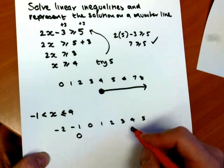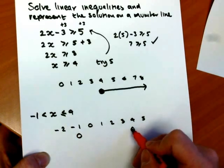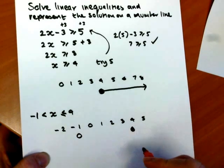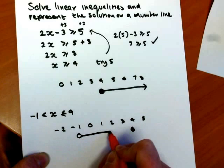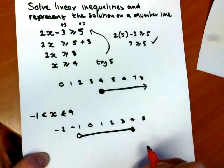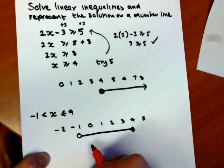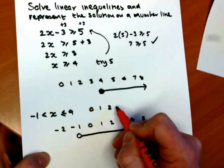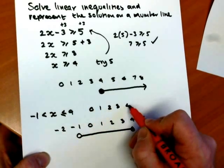And because the 4 has the equals to element to it, fill that in, and then join them together. So we can see that the only whole numbers that satisfy this are 0, 1, 2, 3, and 4.